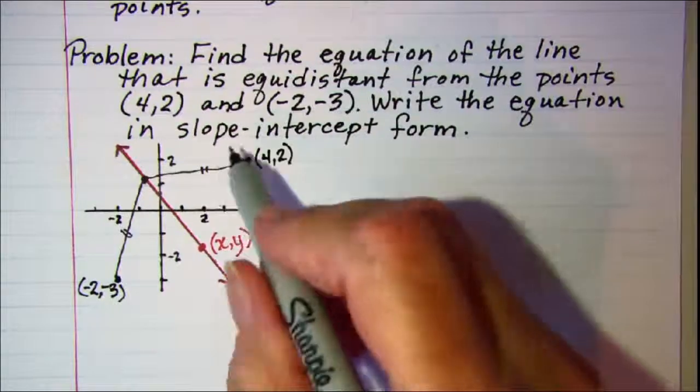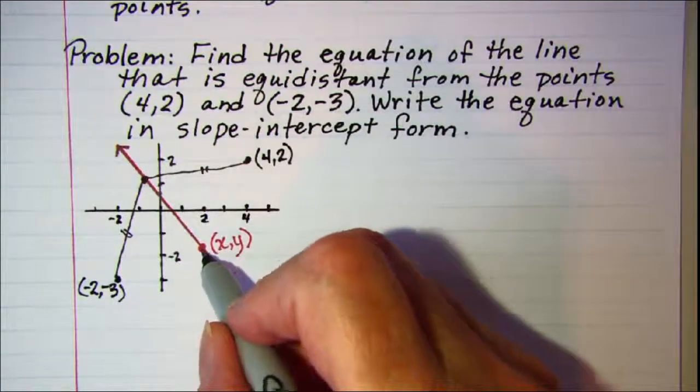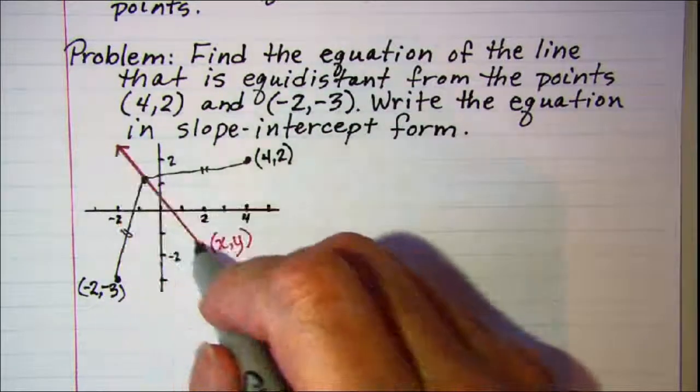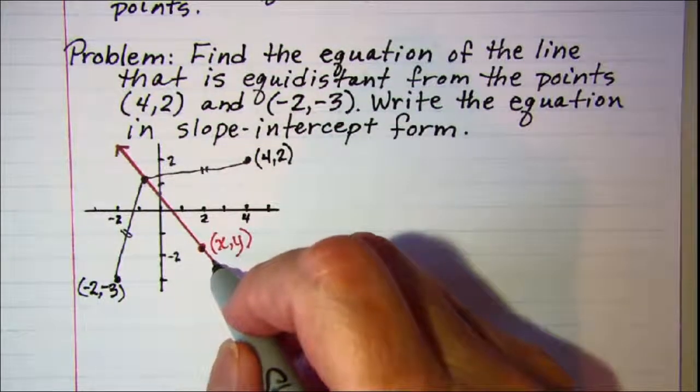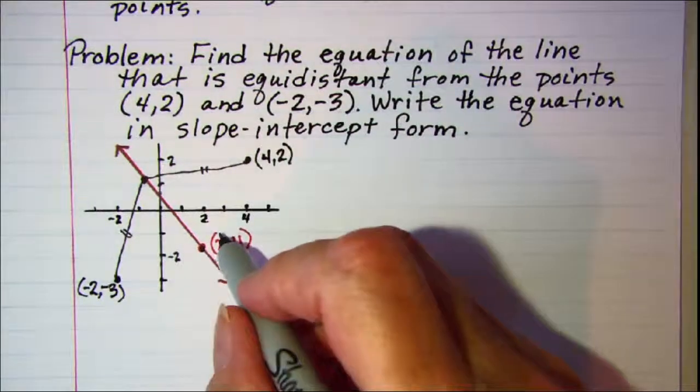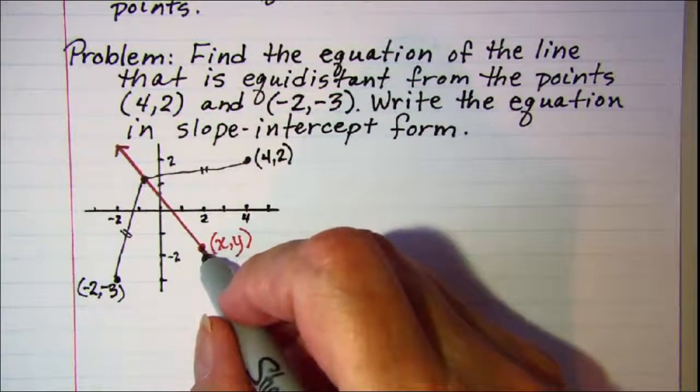So I've picked an arbitrary point right here and I've called it (x, y) because we really don't know anything about the line yet except that it's equidistant between those two points. And so we'll just call that point (x, y).